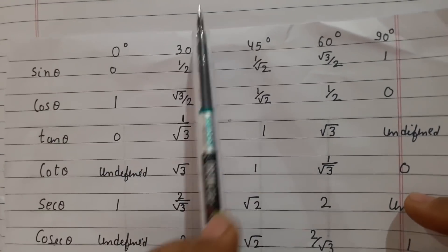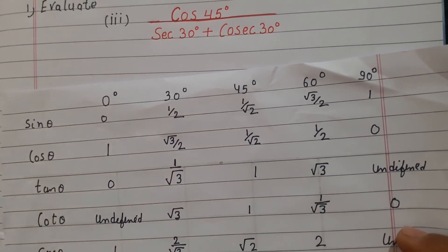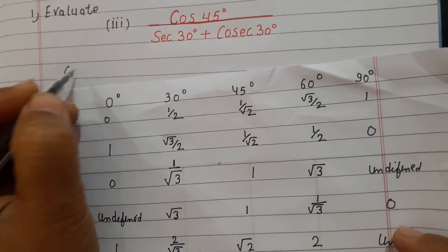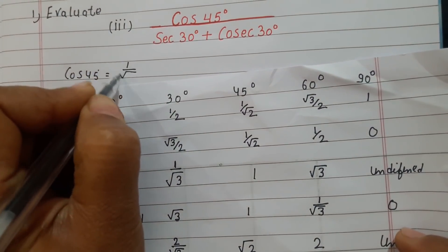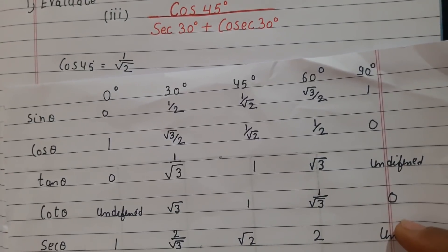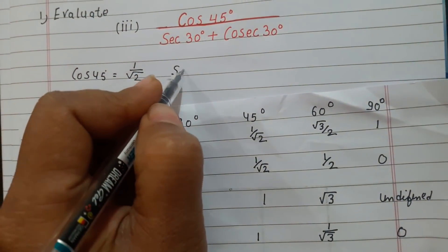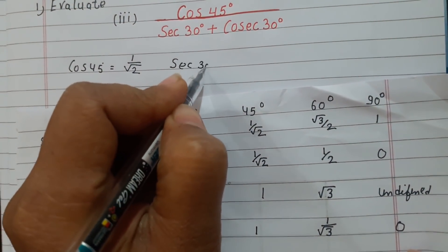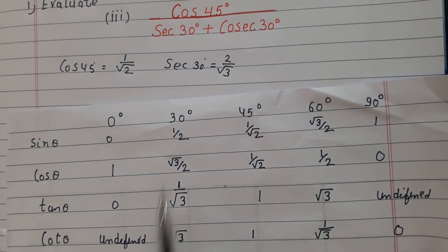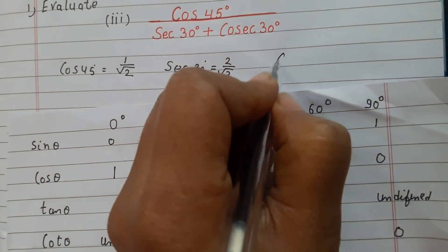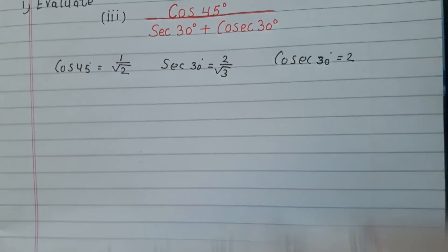So here we need three values. Cos 45 degrees is 1 by root 2. Sec 30 degrees is 2 by root 3. And cos 30 degrees is root 3 by 2. We have to use these three values.